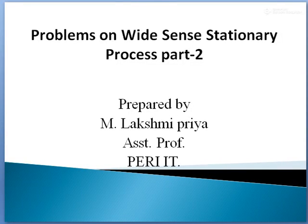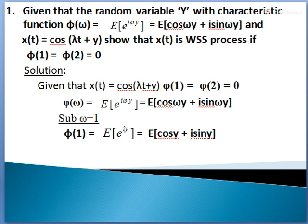Let us see some problems on the wide sense stationary process. Given that the random variable Y with characteristic function φ(ω) equal to E[e^(iωY)], which is equal to E[cos(ωY) + i·sin(ωY)], and x(t) equal to cos(λt + Y). Show that x(t) is a WSS process if φ(1) equal to φ(2) equal to 0.